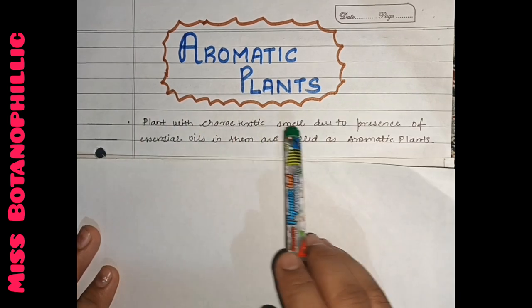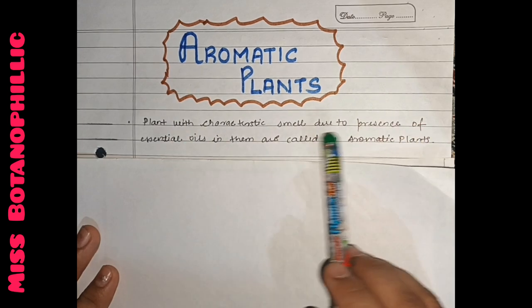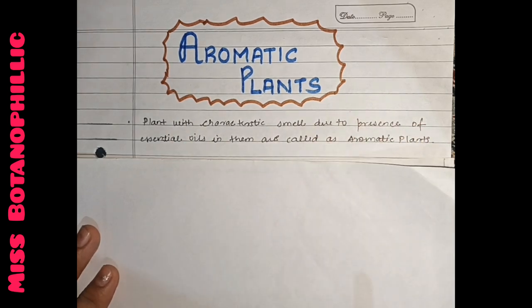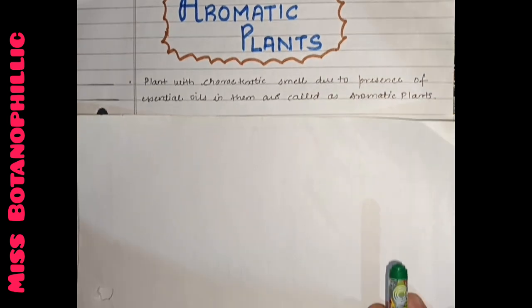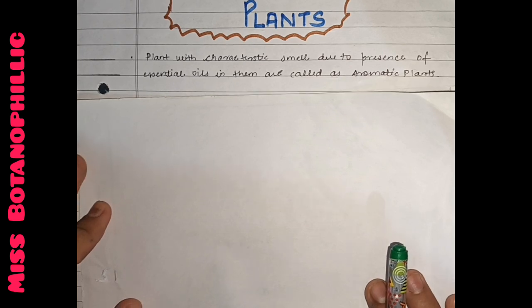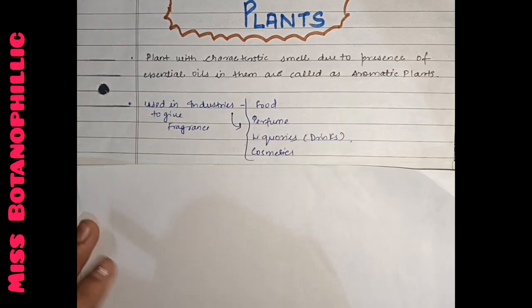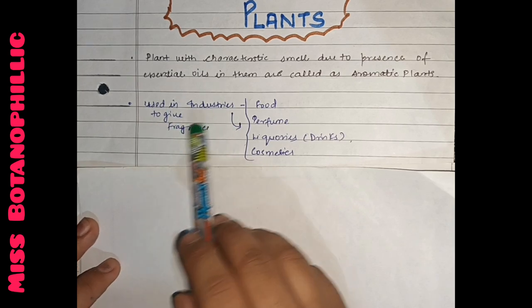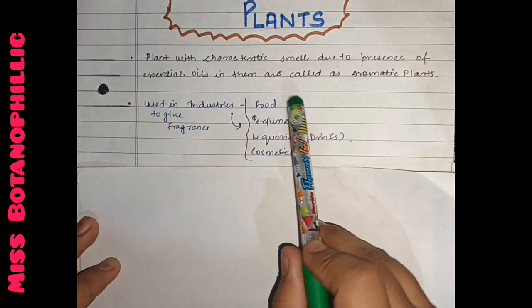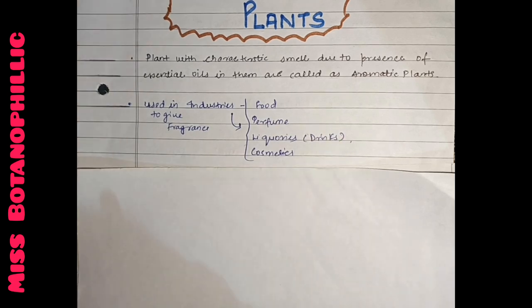Plants with characteristic smell due to the presence of essential oil in them are called aromatic plants. Now, where are these aromatic plants used? They are basically used in such industries: food, perfume, liqueurs, especially cold drinks, and for cosmetic purposes, for fragrance.